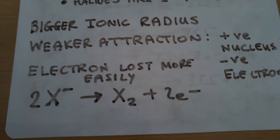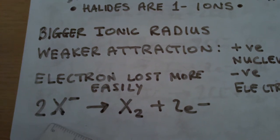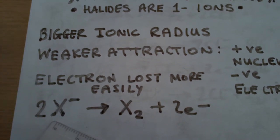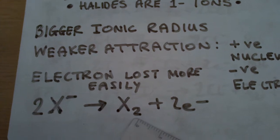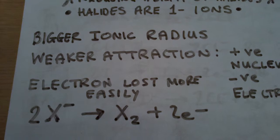And there is a half equation for all of the halides losing their electrons: 2X-, where X- represents a halide ion (e.g., iodide), goes to X2, which is the halogen (e.g., I2), plus two electrons.